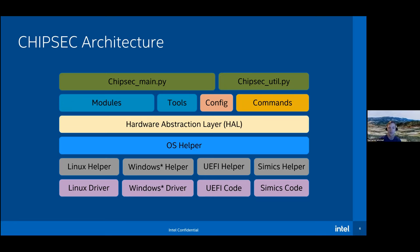Below the main entry points is the hardware abstraction layer (HAL), handling things like memory, PCI, and SPI reads and writes. Below that are OS helpers — a generic OS helper that loads drivers and checks the environment, OS-specific helpers that communicate to underlying drivers, and the kernel drivers themselves.